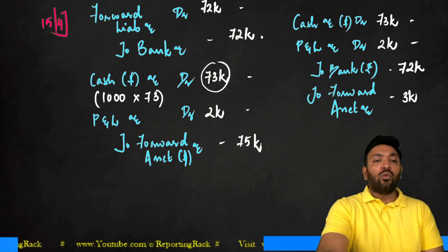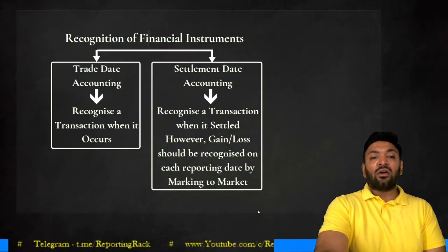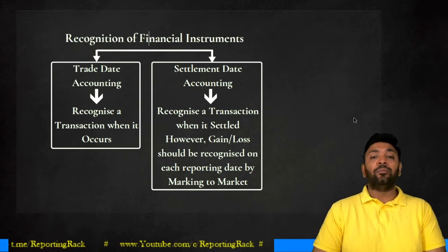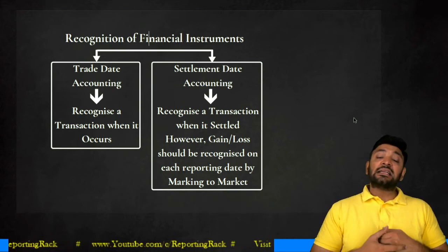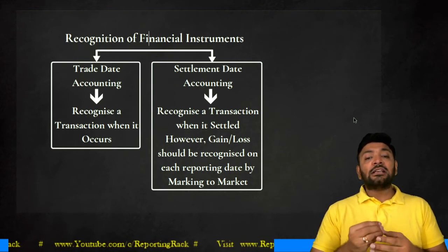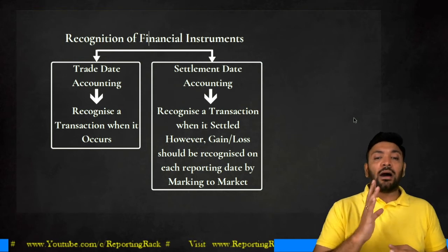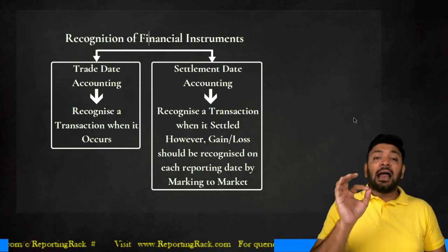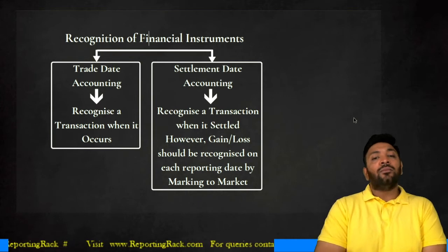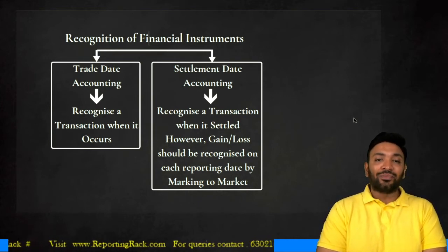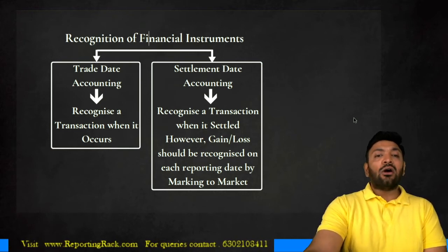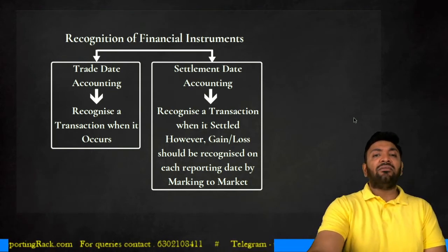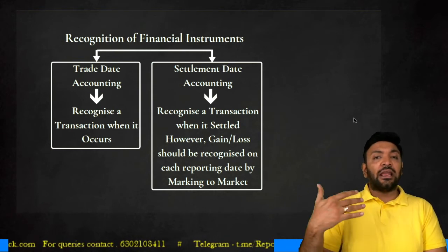To summarize: trade date accounting means recognize the transaction when it occurs, on the date of transaction. Settlement date accounting means recognize the transaction when it is settled. However, even under settlement date accounting, gain or loss should be recognized on each reporting date by marking to market — that is, measuring at the current market price or fair value.